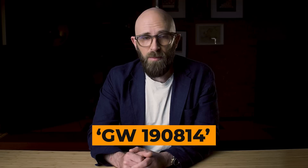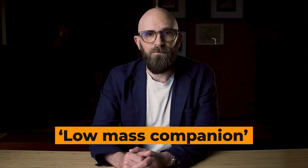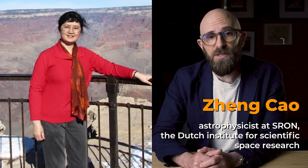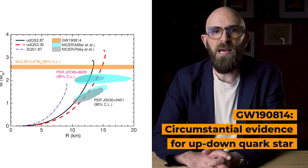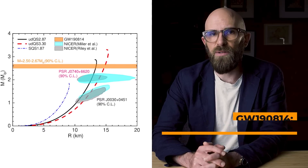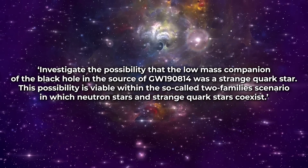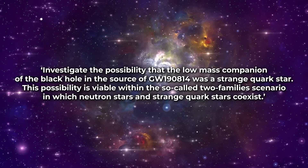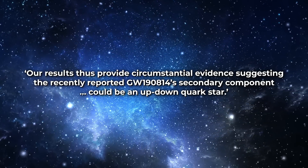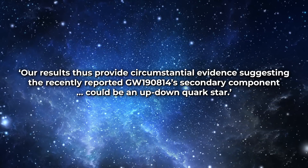This new gravitational wave signal, dubbed GW190814, was believed to have originated from a black hole and a nearby low-mass companion — let's call this one Elmer. Elmer became the object of a study conducted by Zeng Tao, astrophysicist at SRON, the Dutch Institute for Scientific Space Research. Results published in September 2022 under the title 'GW190814: Circumstantial Evidence for Up-Down Quark Star' sought to investigate whether the low-mass companion of the black hole could be a strange quark star. Their conclusion: GW190814's secondary component could be an up-down quark star.